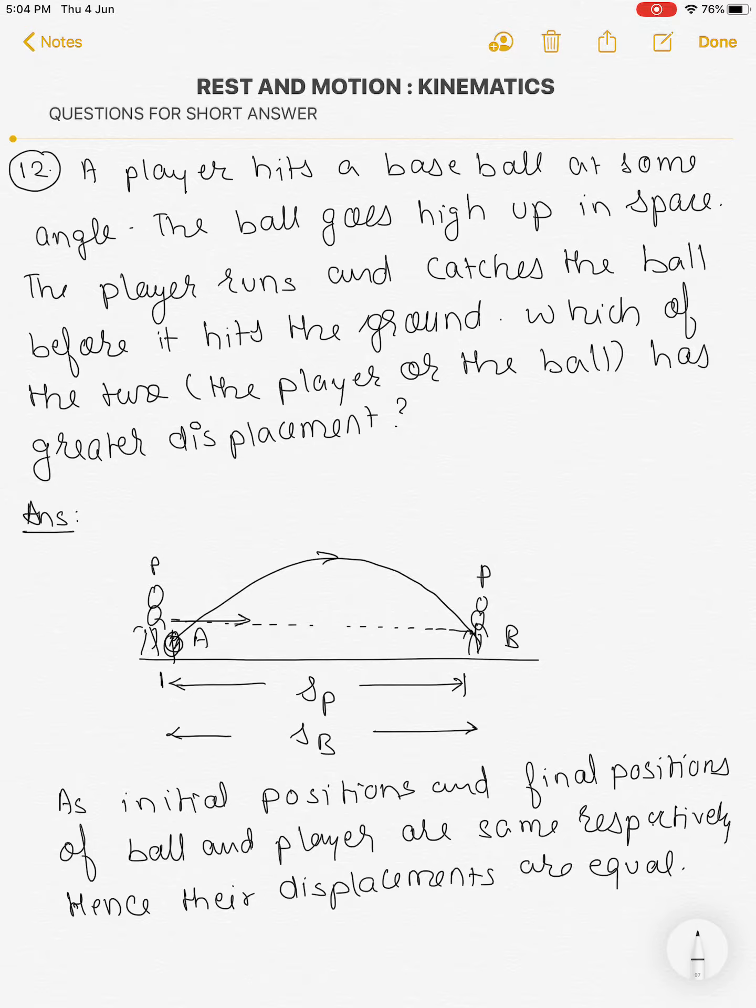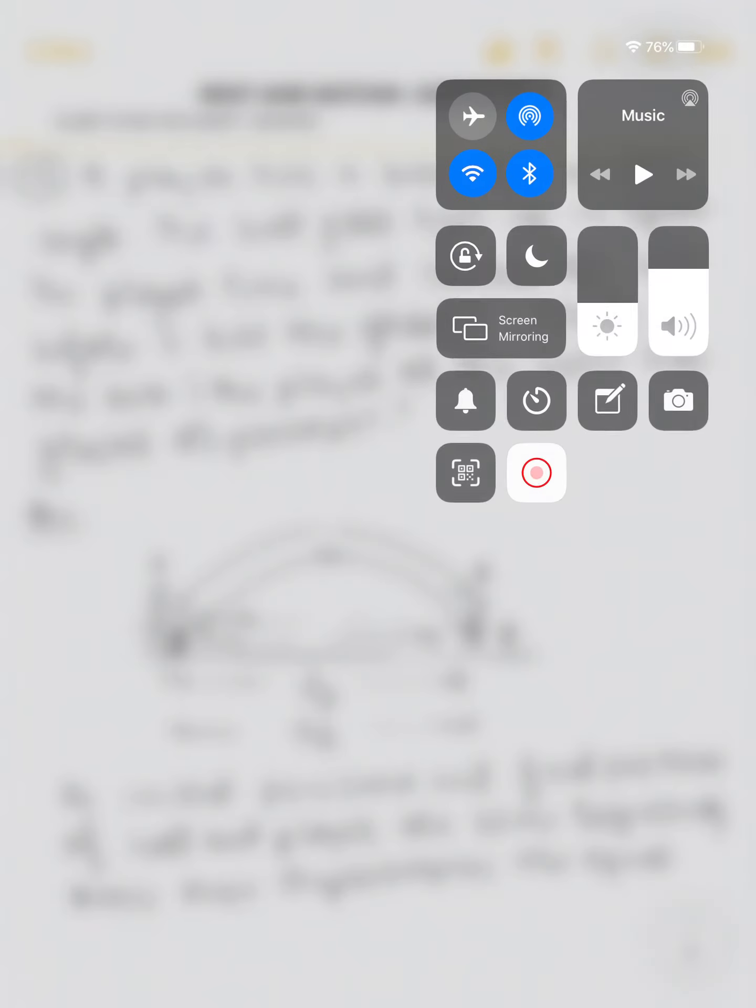If it is said that which one has traveled greater distance, so obviously the path length, that is distance traveled by ball, is more than the distance traveled by player.